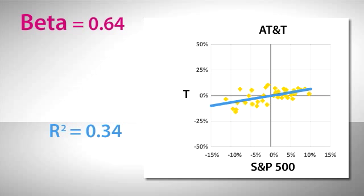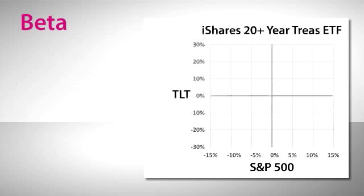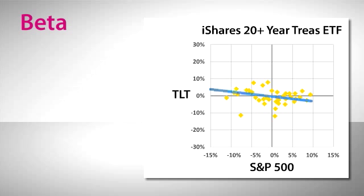What about a security that you wouldn't expect to be related to the S&P 500 index at all? Say, an ETF that tracks long-term treasury bonds. Here you can see that the beta is actually negative, and that the correlation is only .10, almost no correlation at all. Looking at data like this can help you decide whether a bond ETF might help you balance your portfolio.